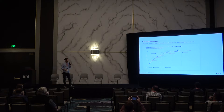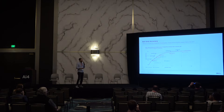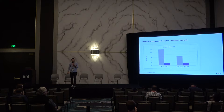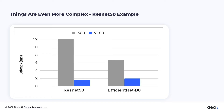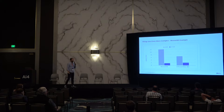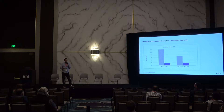Here is an example of the accuracy-latency trade-off for common models in image classification. The boundary curve is what we call the efficient frontier — the optimal gradient between accuracy and latency. But it's not simple, because if we measure on one hardware versus another, performance can flip. For example, on a K80 GPU versus a V100 GPU, ResNet-50 and EfficientNet B0 can switch their performance characteristics. So model selection is hardware-dependent.